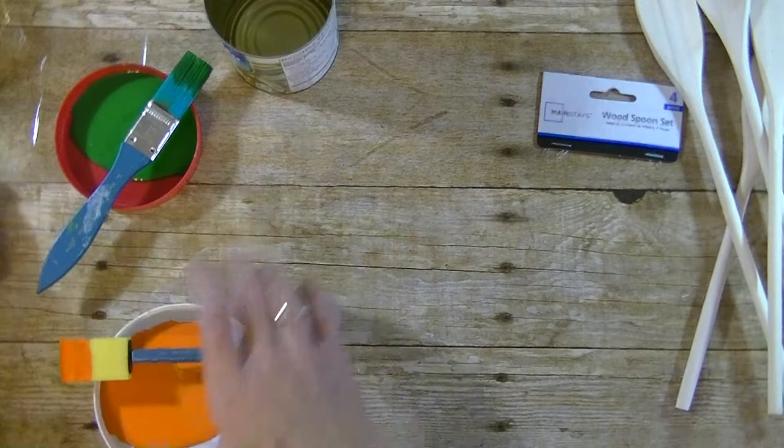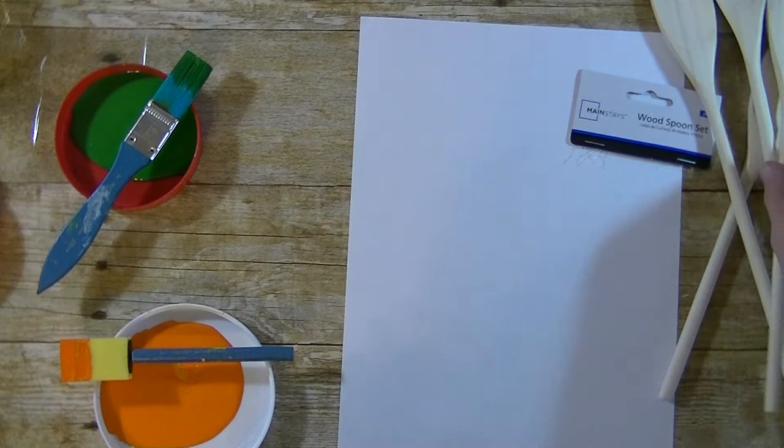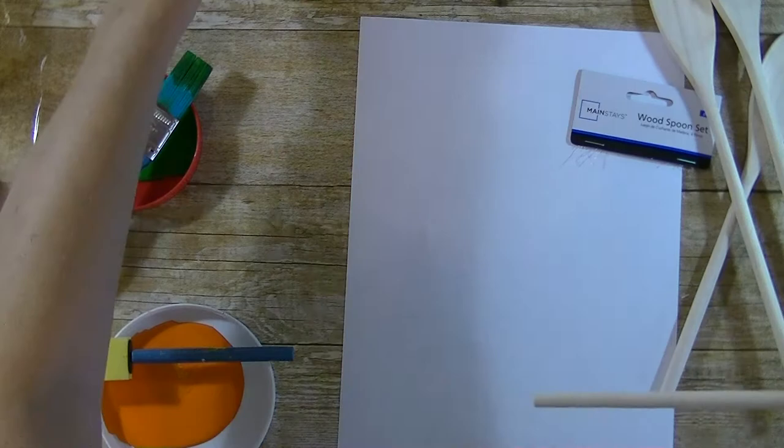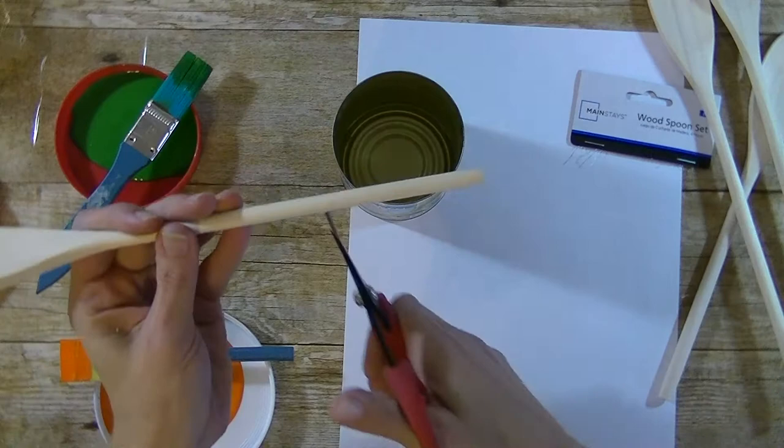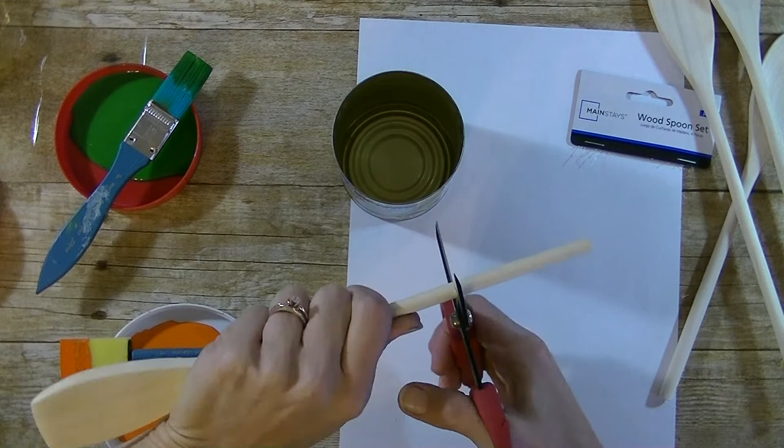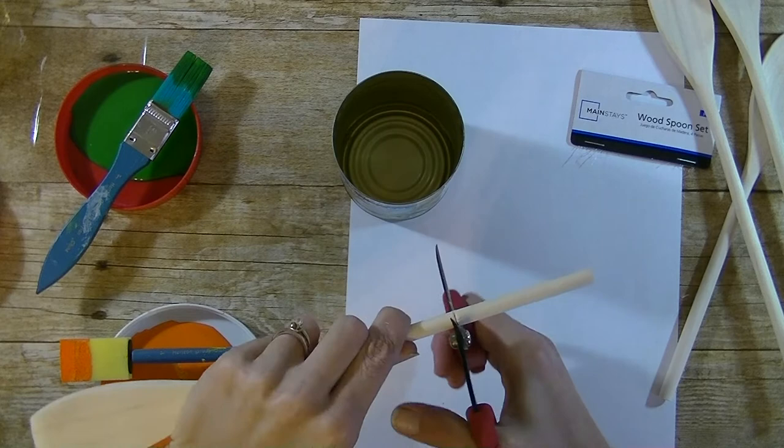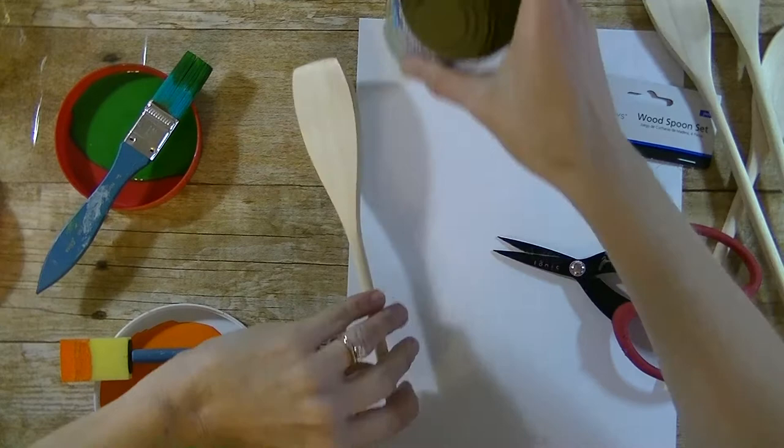We are going to first go ahead and paint our spoons. I am going to bring in a piece of copy paper here and grab your spoons. I am going to cut mine down a little bit. They were a tad bit too big for my can. If you are using a taller container, you can certainly leave them the way they are. I am just using my Tim Holtz scissors to cut these guys down.